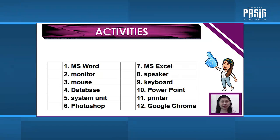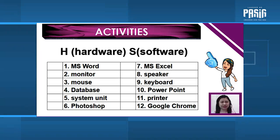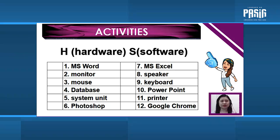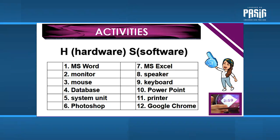To check your understanding of our lesson today, I have here a list of hardware and software components. All you have to do is copy the list and before each item write H if it is hardware or S if it is software. I am going to give you three minutes to finish the task — your three minutes starts now.